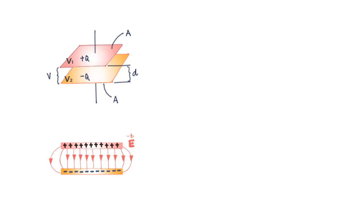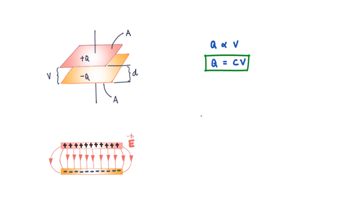Each plate is at a certain potential, and therefore there is a potential difference between them — let us call it V. We know that potential is proportional to the charge value: the more the charge on each plate, the more the potential difference between the plates. So we can say V is proportional to Q, or Q is proportional to V. Introducing a constant, we get Q = CV, where C is the capacitance of the setup.